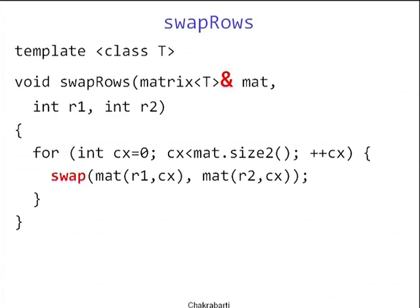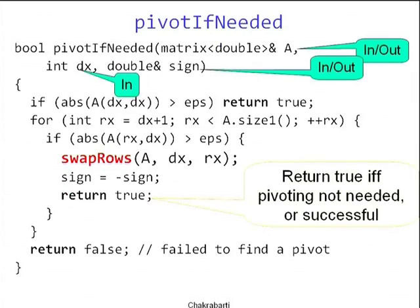Another reason why writing alias-proof code is important: in some elimination or inversion routine, you will never know if R1 equals R2. If R1 equals R2, you don't want to mangle the row — you want nothing to happen. You could check first: if R1 equals R2 then return immediately. So that's swap and swap_rows. Now let's see how to pivot: pivot_if_needed. You pivot only if required, so let's push that check inside the routine.